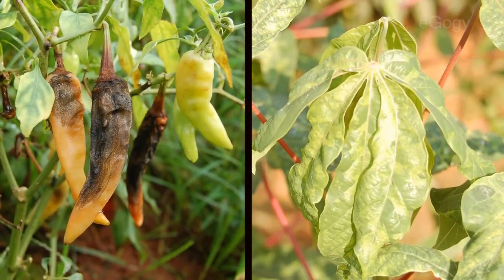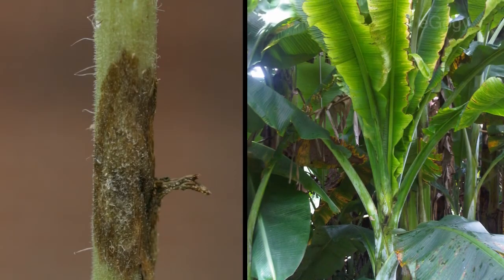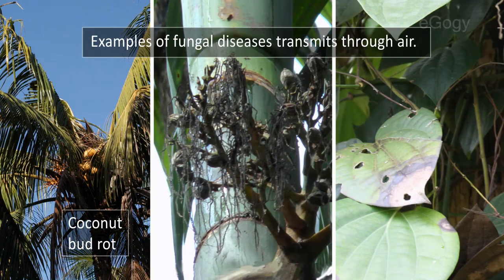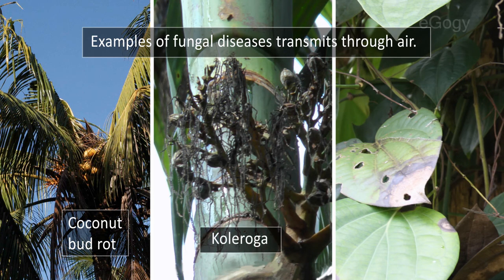Like animals, plants too are affected by diseases. Coconut bud rot, colletotrichum, and quick wilt in pepper are examples of fungal diseases transmitted through air.